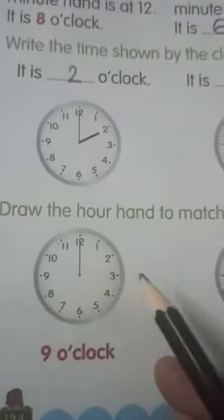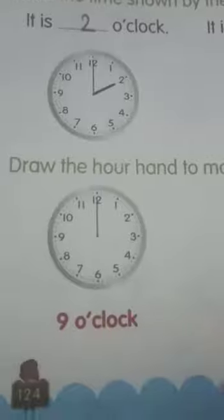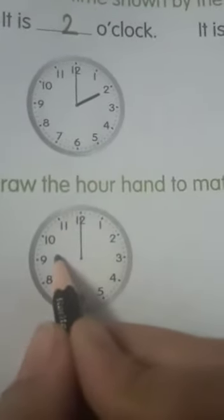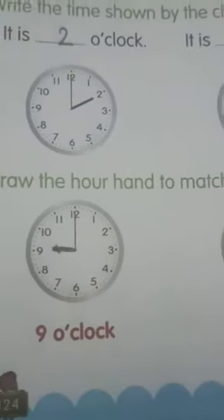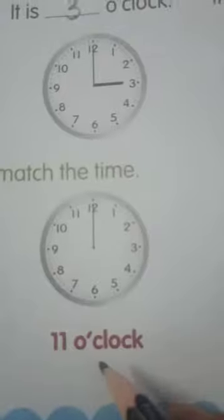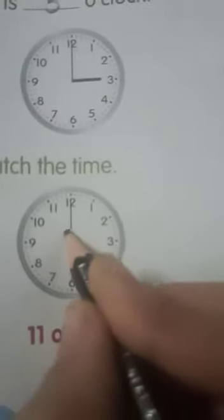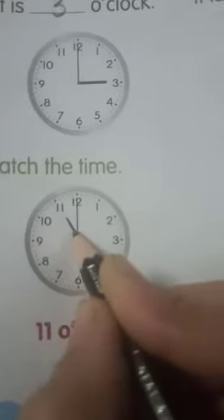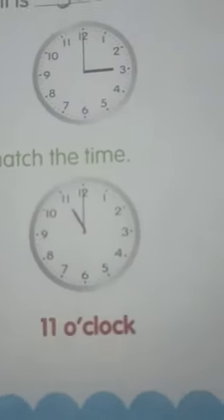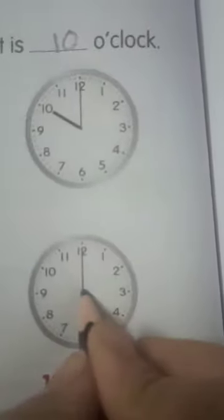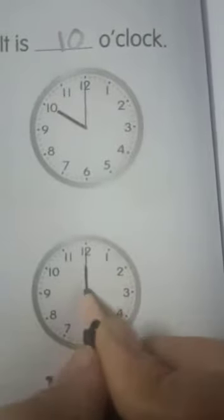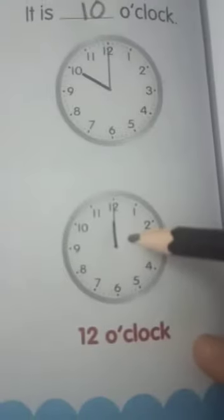Next, we have to draw the hour hand and match the time. What is this? It is 9 o'clock. We have to draw the short hand towards number 9. Next, 11 o'clock. We have to draw short hand towards the number 11. It is 11 o'clock. And the next, we have 12 o'clock. We have to draw the short hand on the long hand only as it is 12 o'clock. So, we have to draw the hour hand towards the 12 only.